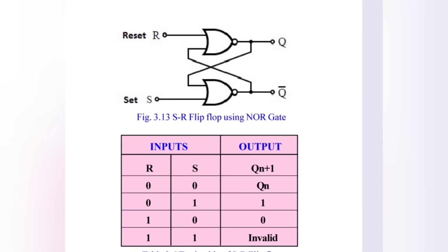Inputs and outputs. The inputs are R and S, and the outputs are Q and Q-bar. R is reset and S is set. When reset is 0 and set is 0, the output is the previous state.